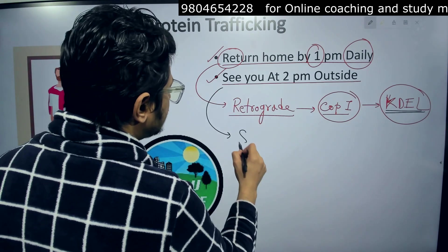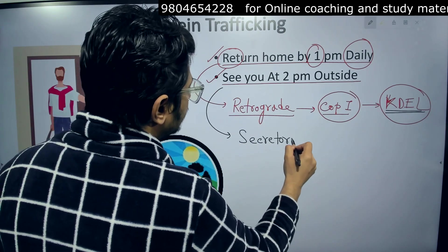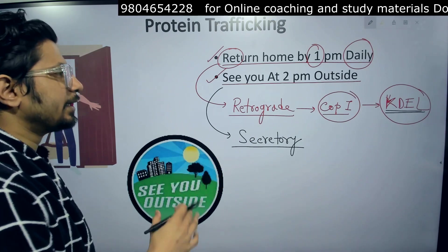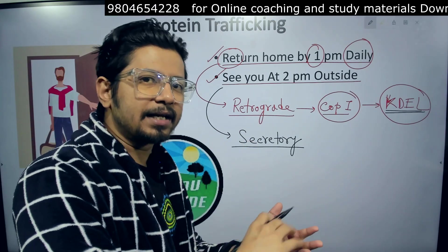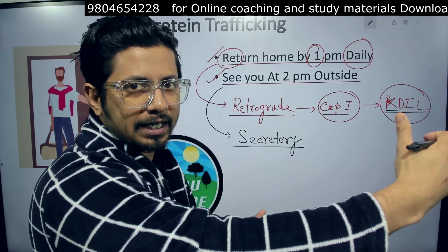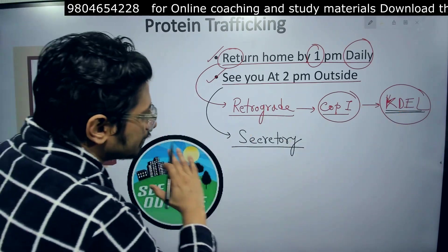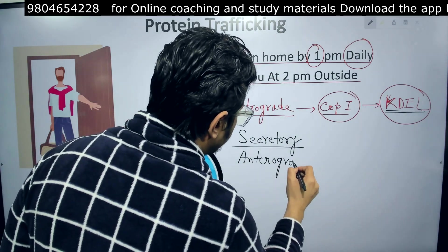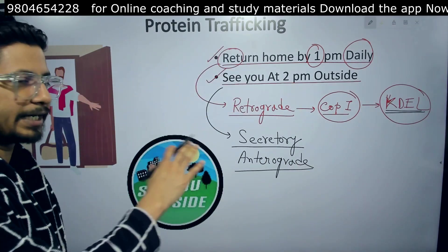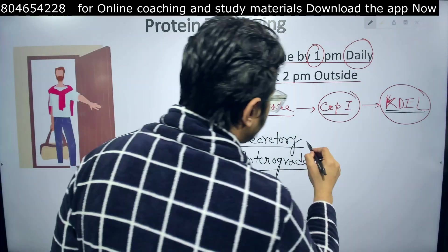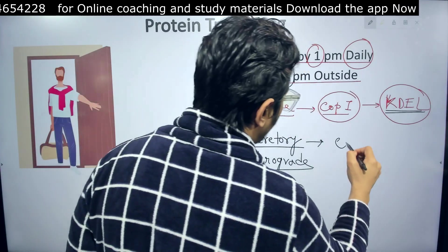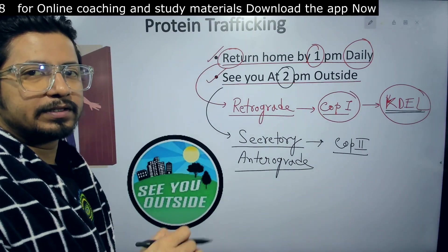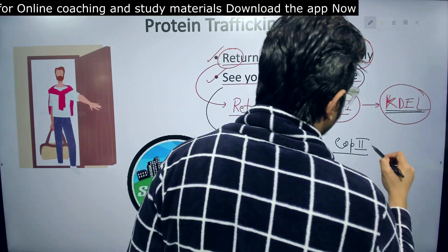The second sentence, 'See you at 2 pm outside,' uses 'C' for the secretory pathway. The secretory pathway is the opposite of retrograde — it means secretion from the ER to the Golgi and then outside of the cell membrane. This is also known as the anterograde pathway. '2 pm' tells us it involves COP2 vesicles — COP2 proteins are involved in the formation of vesicles in anterograde transport.